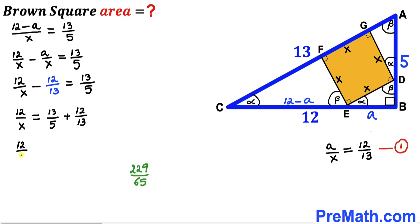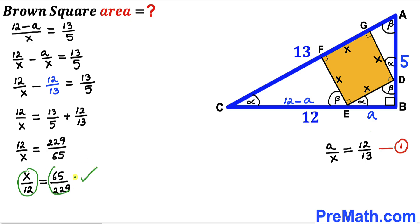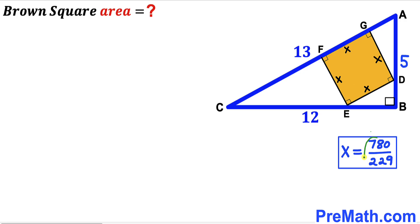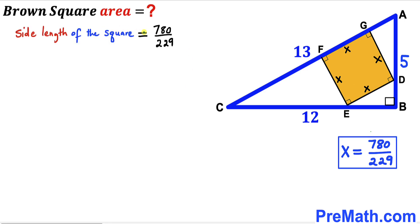We now have 12 over X equals 229 over 65. Flipping both sides and multiplying both sides by 12 to isolate X, the 12s cancel and X equals 65 times 12 over 229, which gives us 780 over 229. So the side length of the brown square is 780 divided by 229 units.